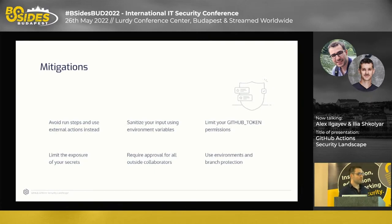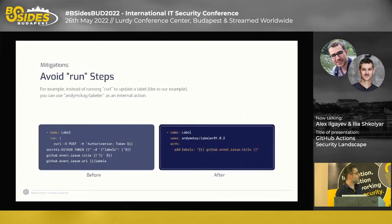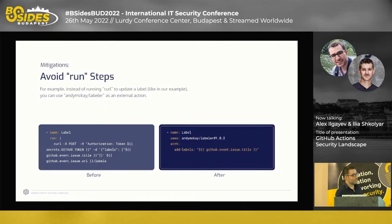Now let's see how to mitigate these attacks. The first mitigation is to avoid run steps where possible. Instead of using a command susceptible to injection, you can use an external action called 'labeler' that does exactly the same thing but is not susceptible to injection. This is not always possible, but whenever it is, it's highly recommended.